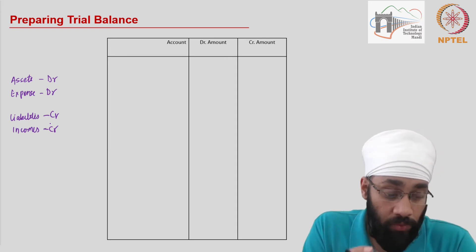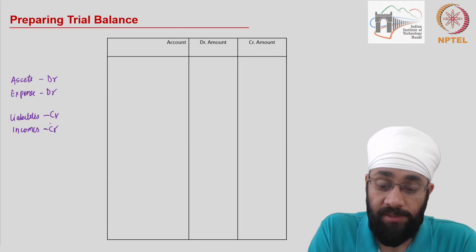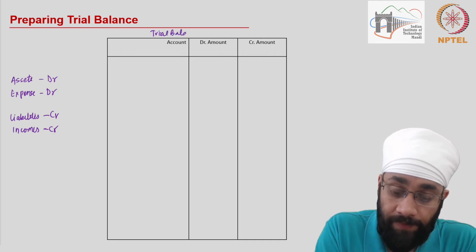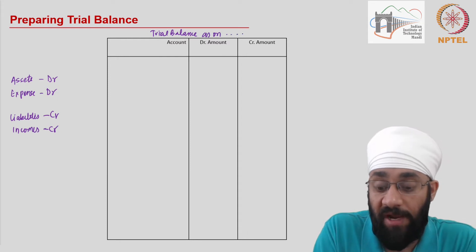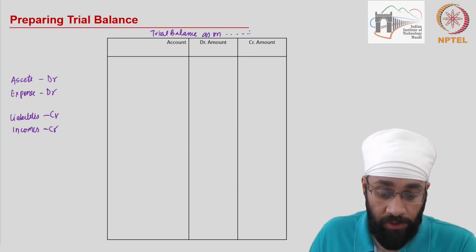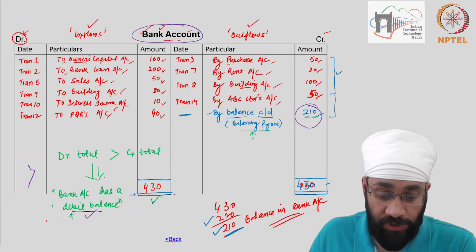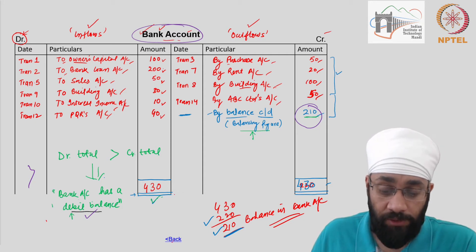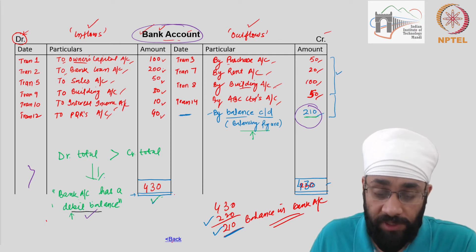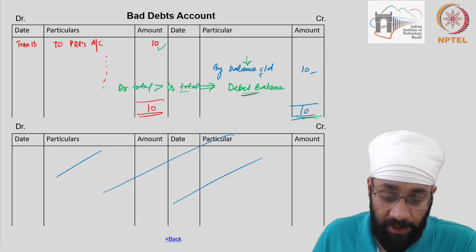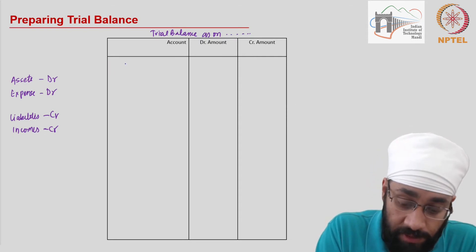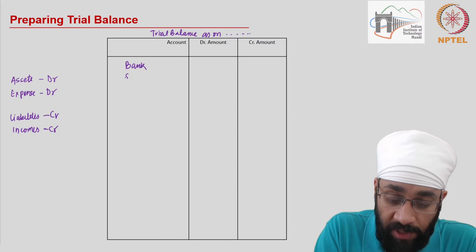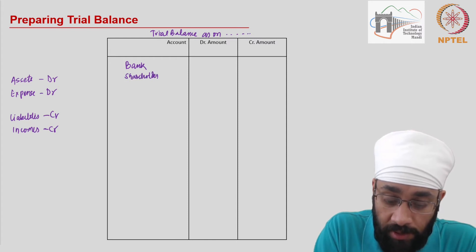Now let's start posting the account balances into the trial balance. This is the trial balance — 'Trial Balance as on' — and if we had the date we would write it here. I'm going to go to the very first account, which is bank account. The first thing to do is list all the possible accounts that we have, so in this column we write the account name. We have bank account, shareholder capital account.